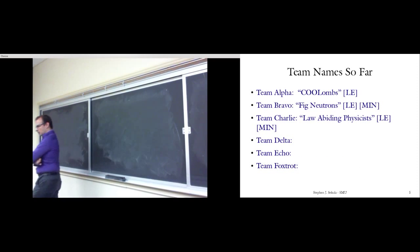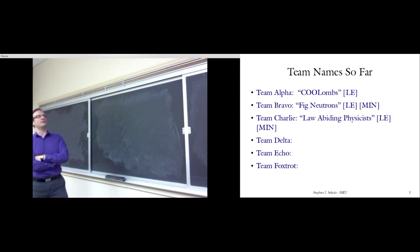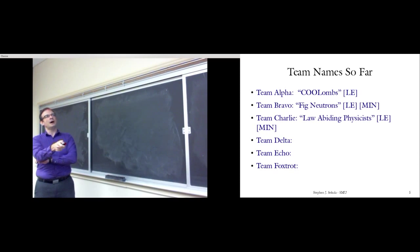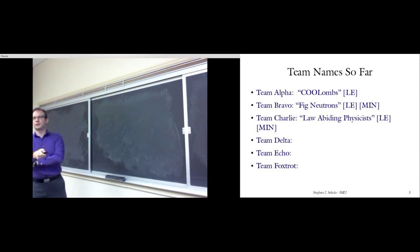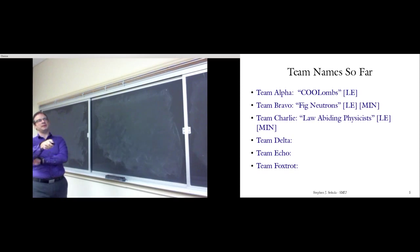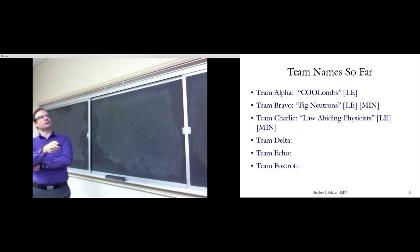Here are the team names so far. We've got Team Alpha, now known as the Cool Ohms, and they have a lead editor — Darcy, that's you. If you have notes from the first meeting, just shoot them to me. Team Bravo is the Fig Neutrons — I've got a lead editor and minutes for that. And Team Charlie is the Law-Biting Physicists — lead editor and minutes. I just need Delta, Echo, and Foxtrot.